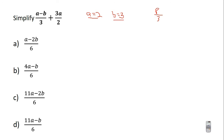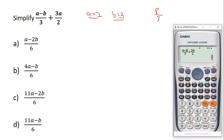So we pick the first option. For the first option, we have (a minus 2b) over 6. We know a is 2, and 2b means 2 times b, and b is 3, so 2 times 3 gives us 6. So we have 2 minus 6 divided by 6, which gives negative 2 over 3. That is not 8 over 3, so that is not the right answer.